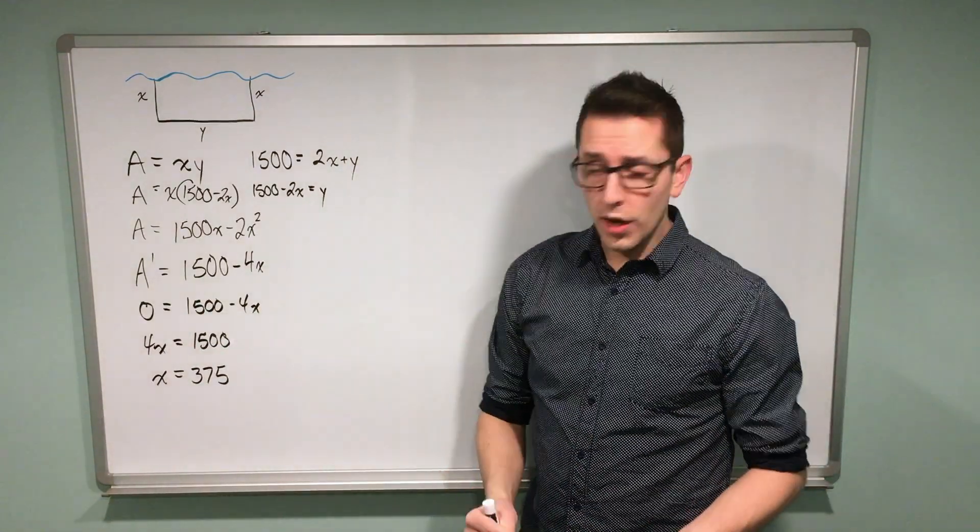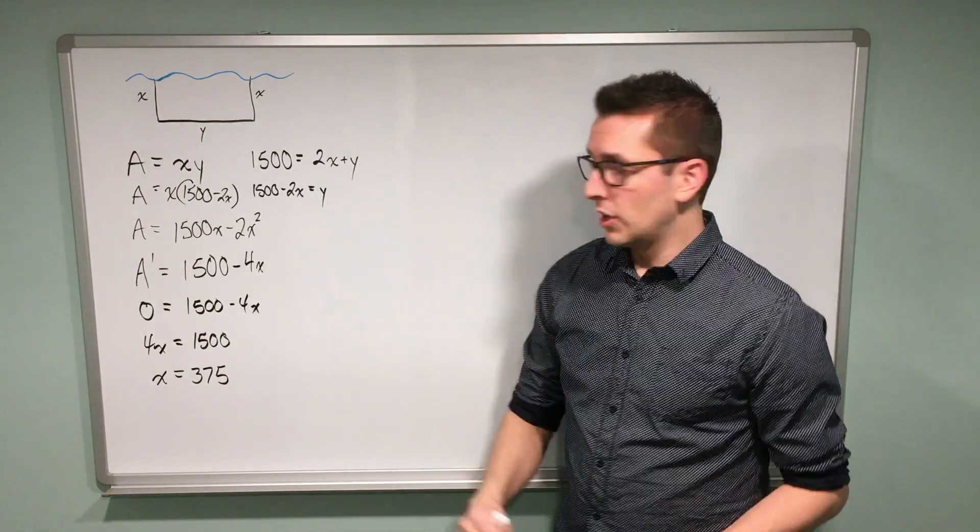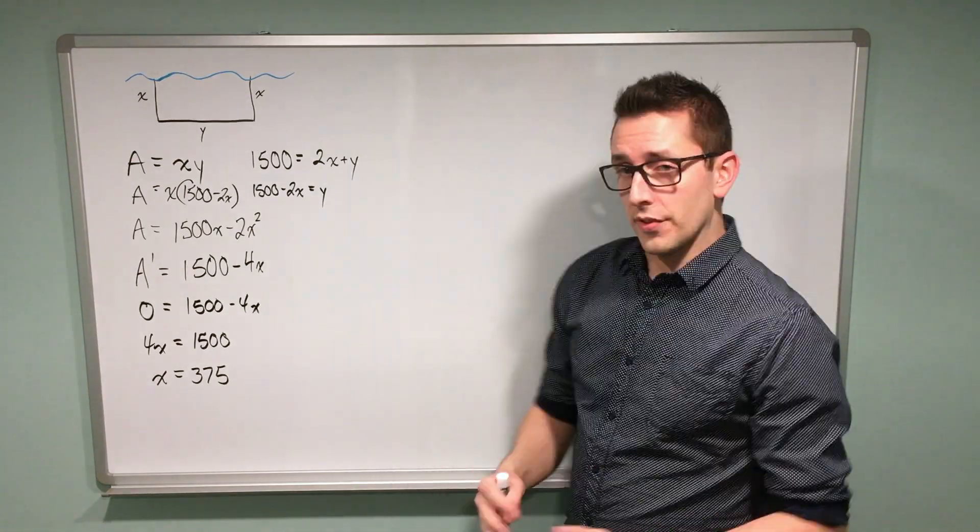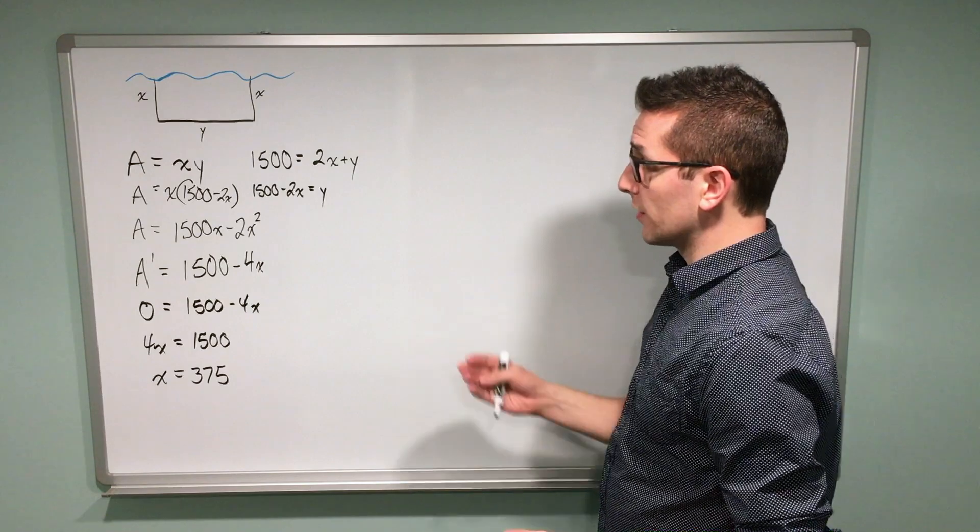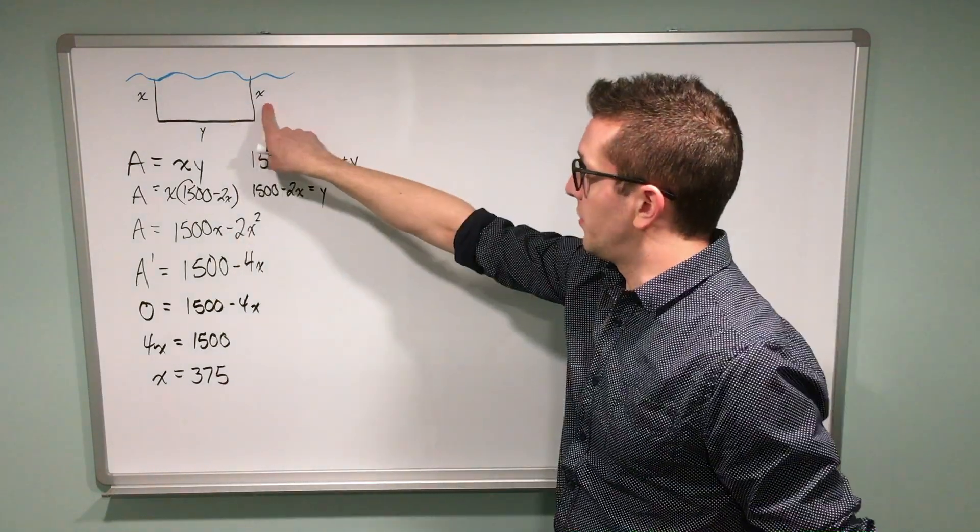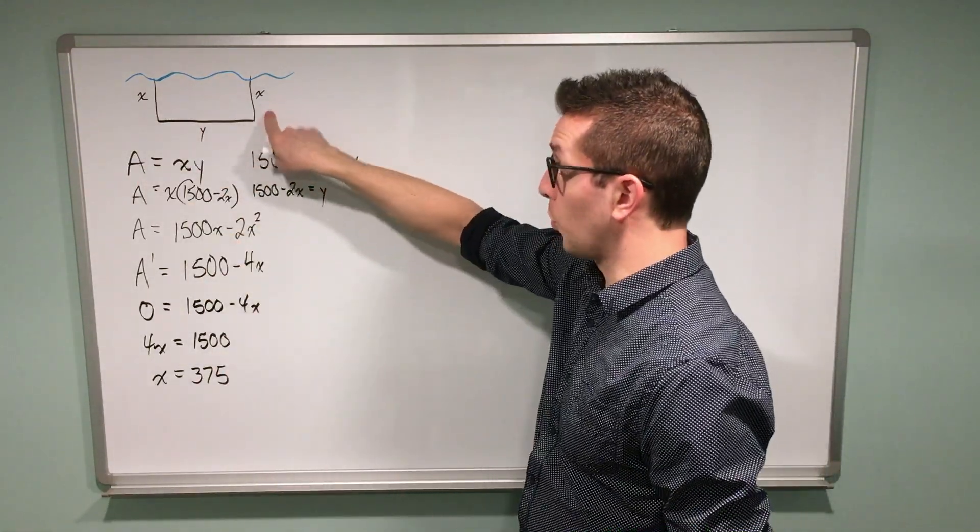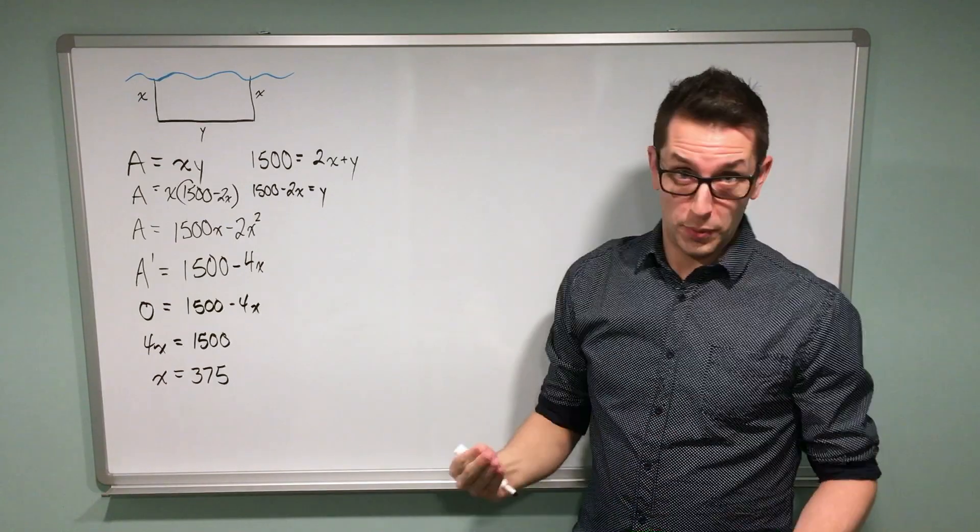So at this point, what I've found is the location on the x axis where my maximum occurs. The original problem was asking for the dimensions of the rectangle that give me the biggest possible area. What I've done is I've found this x value. So if I make my pen 375 meters wide, I should get the biggest possible area.